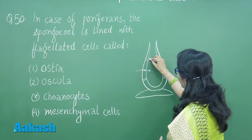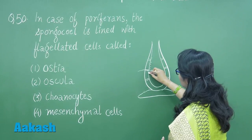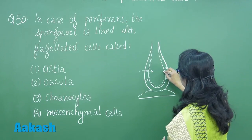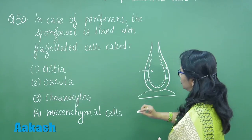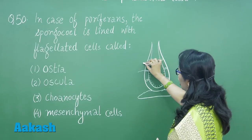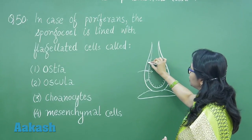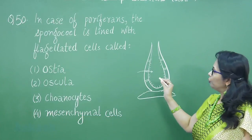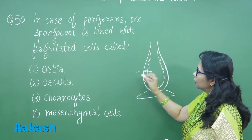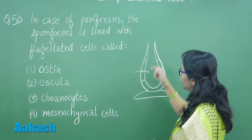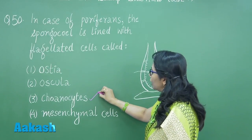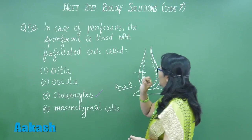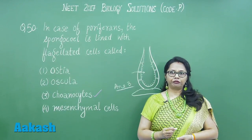The entire spongocoel is lined by flagellated cells called choanocytes, which are the most characteristic cells of sponges. Between the outer layer and inner layer there is mesenchyme or mesohyle, in which there are wandering cells called amoebocytes. So the answer is choanocytes, as they are the ones lining the spongocoel. That means our answer is option 3. Let's move on to question number 51.